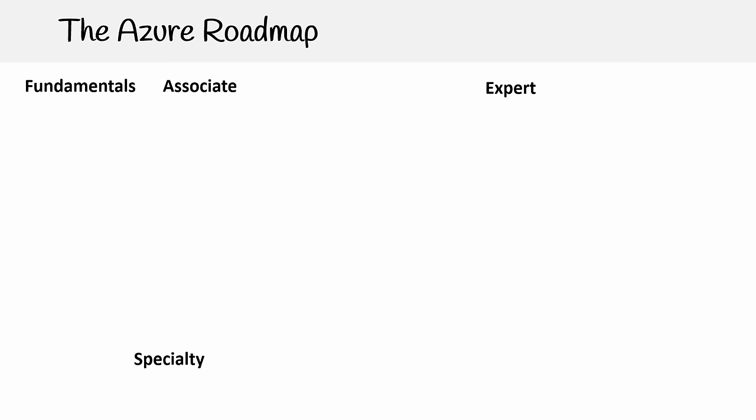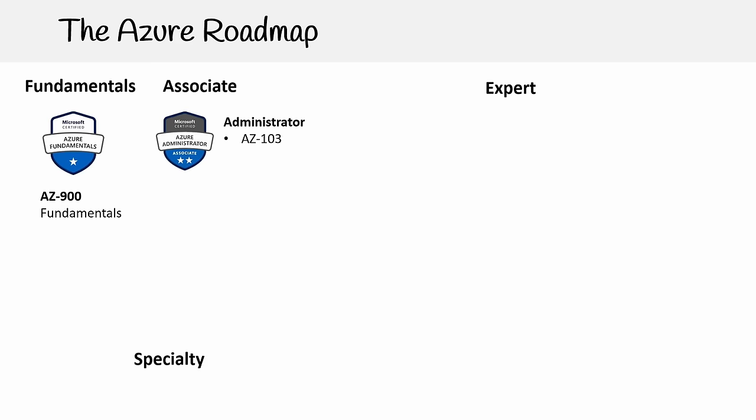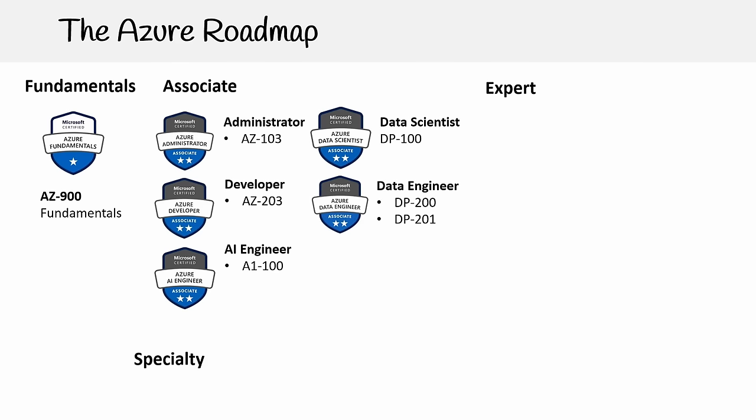Talking about certifications in general for Azure, if you want a roadmap as to what you do after this certification, Azure breaks up their certifications — the role-based certifications — as fundamental, associate, expert, and specialty. In the fundamentals, we have the AZ-900. For the associate, we have the administrator, the developer, the AI engineer, the data scientist, the data engineer. For data engineer, you'll see there are two course codes under it: DP-200 and DP-201.